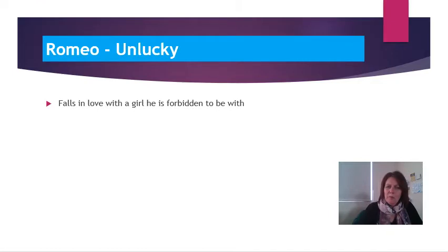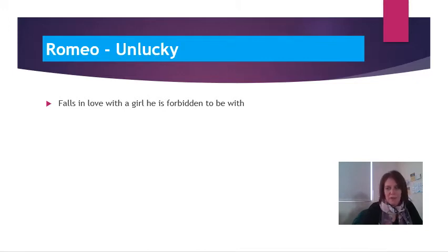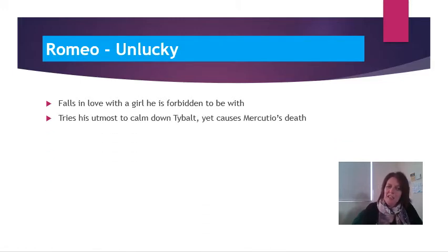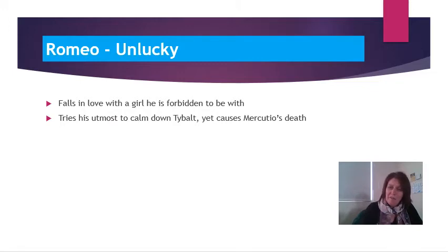Unlucky because he falls in love with a girl that he's forbidden to be with. Romeo feels this is genuine love that he feels for Juliet, but she is actually the daughter of his family's most hated enemy, the Capulets. He's unlucky because despite his best efforts in Act 3 Scene 1, his attempts to calm down Tybalt actually result in the death of his very close friend Mercutio.